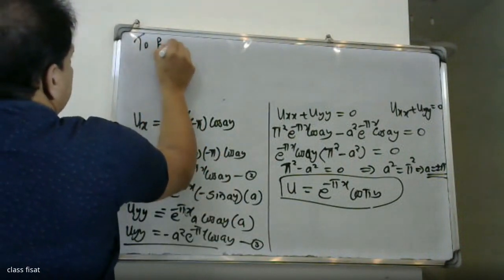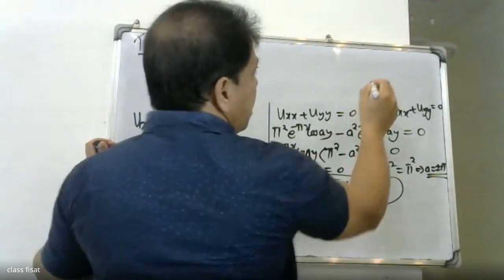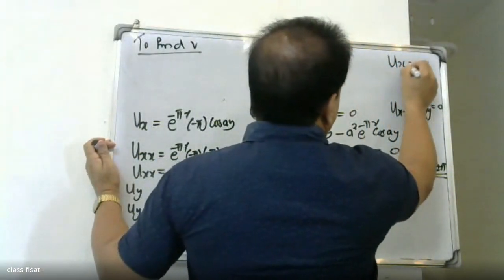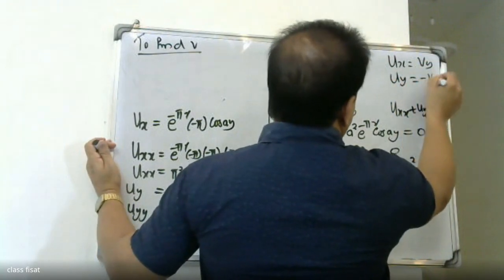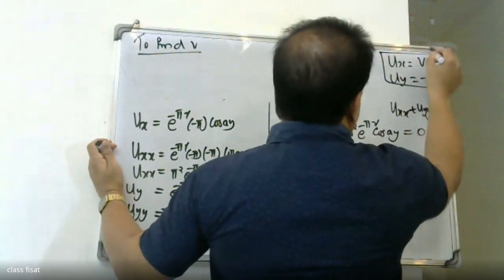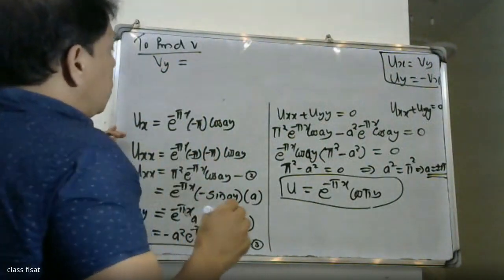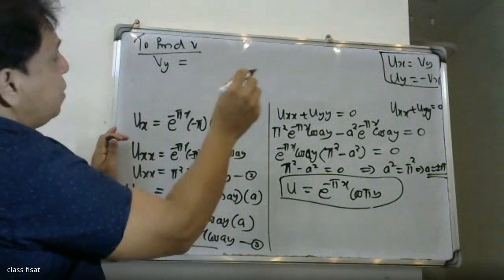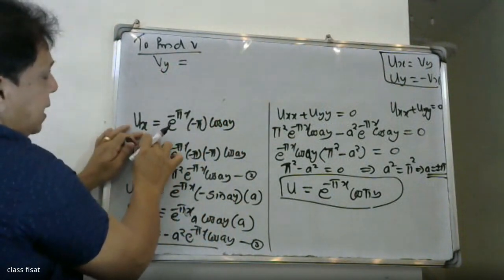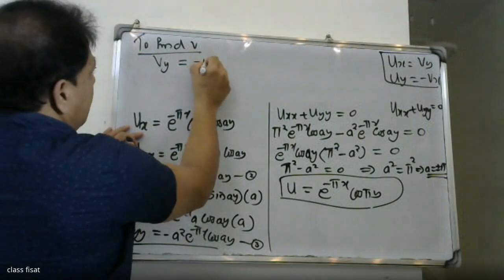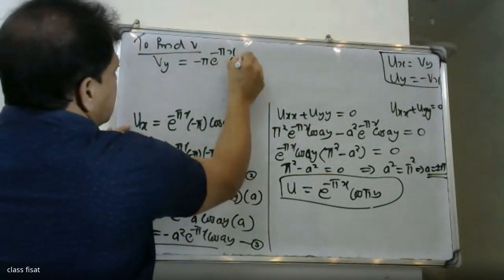To find the harmonic conjugate v, we use the Cauchy-Riemann equations: u_x = v_y and u_y = -v_x. Now u_x = -π e^(-πx) cos(ay), so v_y = -π e^(-πx) cos(ay).